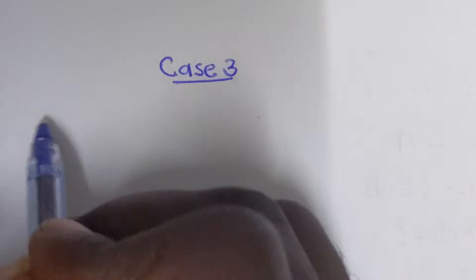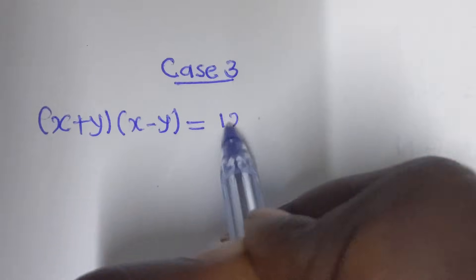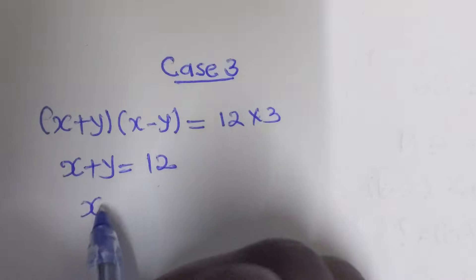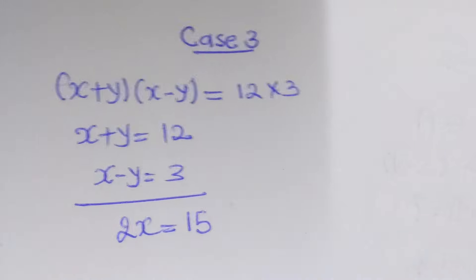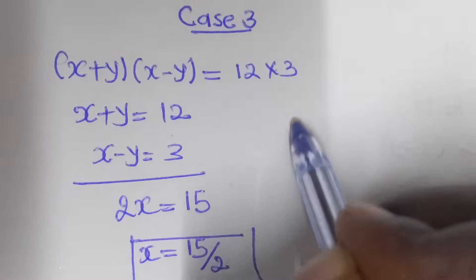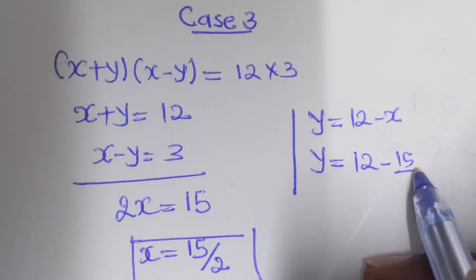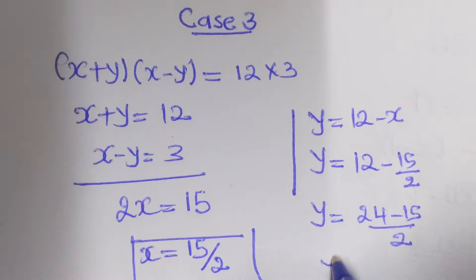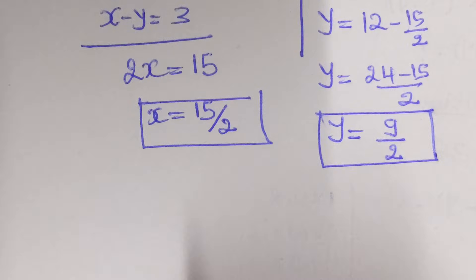For case 3: x plus y and x minus y equal to 12 times 3. So x plus y equal to 12 and x minus y equal to 3. By solving simultaneously, 2x equal to 15, so x equal to 15 over 2. Finding y: y equal to 12 minus 15 over 2, which gives 24 minus 15 over 2, so y equal to 9 over 2.